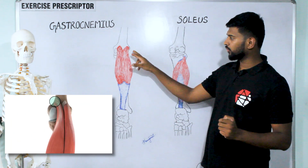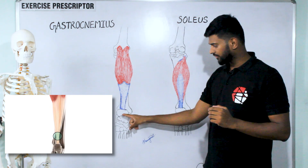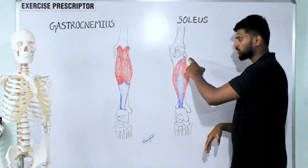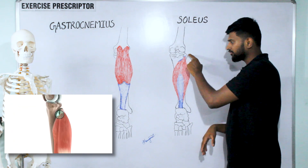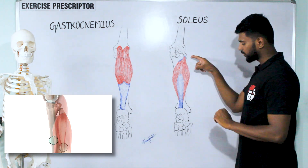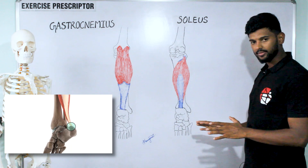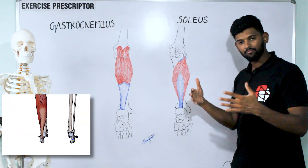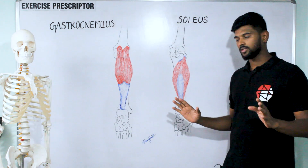The attachment of the calf muscles: gastrocnemius attaches over the posterior medial and posterolateral aspect of the posterior femoral condyle to the posterior surface of the calcaneus. Soleus attaches over the soleal line and posterior upper part of the tibia, the head of the fibula, and proximal one third of the fibula to the posterior aspect of the calcaneus. Both muscles attach over the calcaneus via the Achilles tendon.